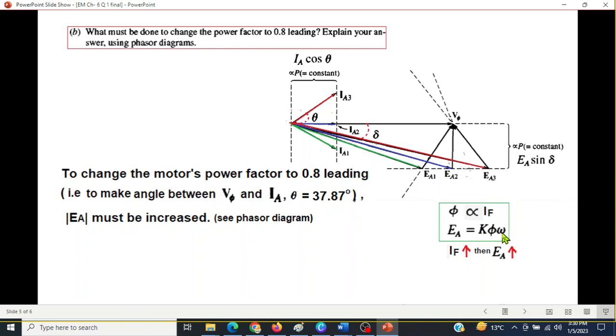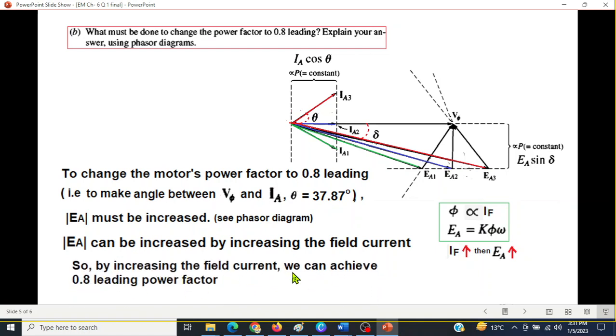In this case the speed is assumed to be constant, so increasing flux will increase EA. Now flux is dependent on the field current. Flux is proportional to the field current, that means if we increase the field current then we can increase EA. So EA can be increased by increasing the field current. Our answer then would be: by increasing the field current we can achieve 0.8 leading power factor as it has been shown here. This is part b.